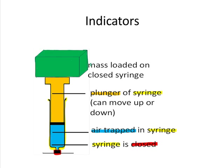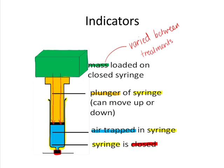Now we put a mass piece on the syringe and we see how much that pushes the syringe down — how much it compresses the air. We can put a little bit of mass at the top or a lot of mass, and then we can see the volume that the air gets compressed to depending on how much mass we load on it.